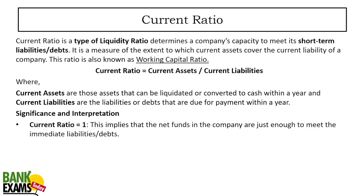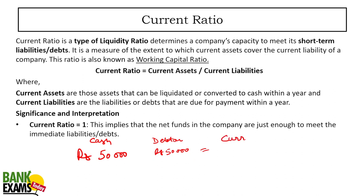First of all, you need to understand what are current assets and what are current liabilities. Let's say you have 50,000 rupees in your account. As a normal businessman, you have 50,000 rupees cash and you gave a loan of 50,000 rupees to your friend. These are your current assets. What is the definition of current assets? Current assets are the assets which are either cash or which can be converted into cash within 30 days.